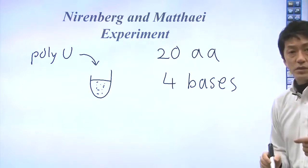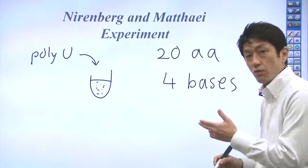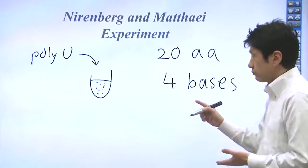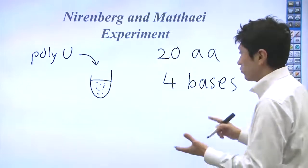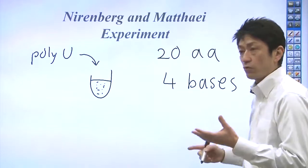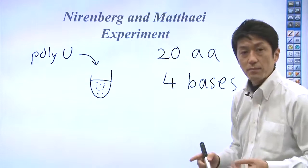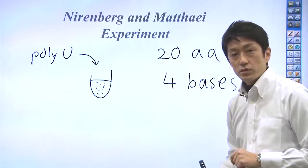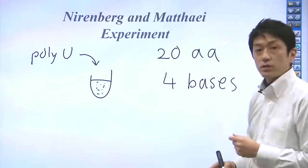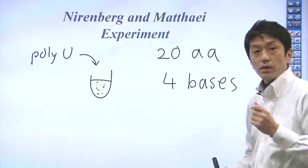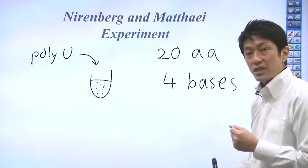The coding units could not be single because 4 bases would be able to encode only 4 amino acids. The coding units could not be pairs. You would have only 16 combinations.